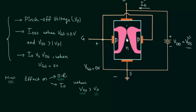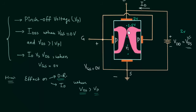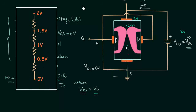We can distribute the potential across this N channel. If VDS is equal to 2V, then the potential at the drain end is 2V. I have considered 4 resistances in this N channel, all having equal value r, so the potential distributes as: 2V at the drain, 1.5V at the next point, 1V at the next, 0.5V at the next, and 0V at the source end.